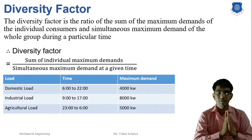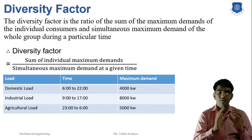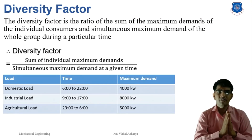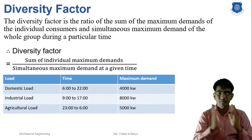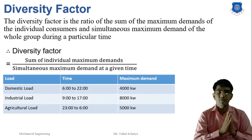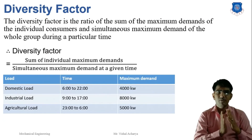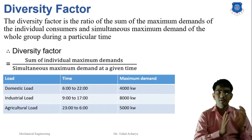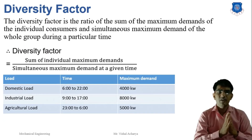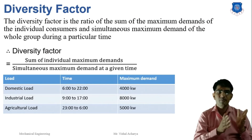In an example with three types of load — domestic, industrial, and agricultural — the sum of the individual maximum demands is: domestic 4000 kW + industrial 8000 kW + agricultural 5000 kW = 17,000 kW. But for the time period 6 to 17, only domestic and industrial loads operate, giving a simultaneous demand of 12,000 kW. So the diversity factor for 6 to 17 is 17,000 / 12,000, which is greater than 1. This same calculation can be done for different time periods.